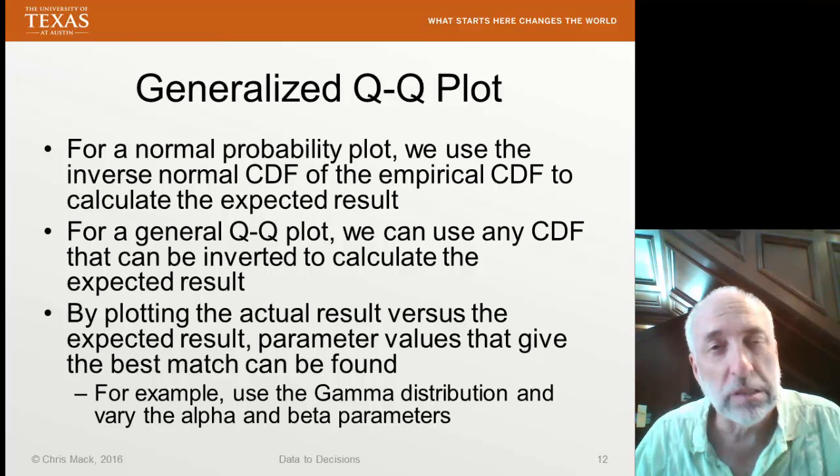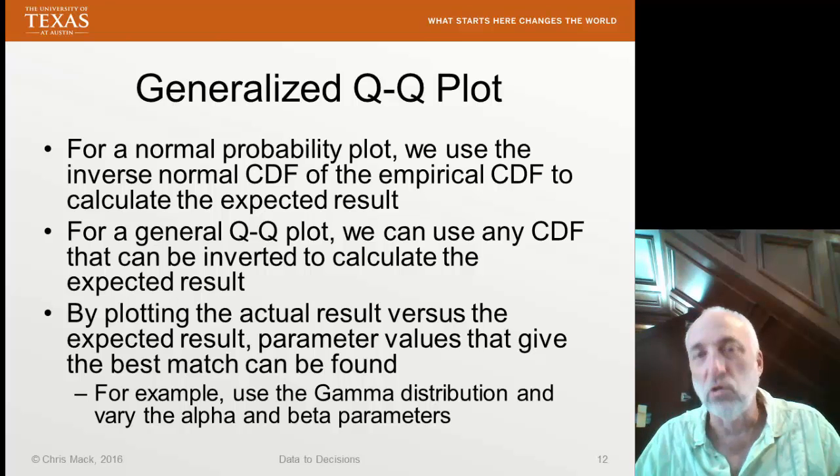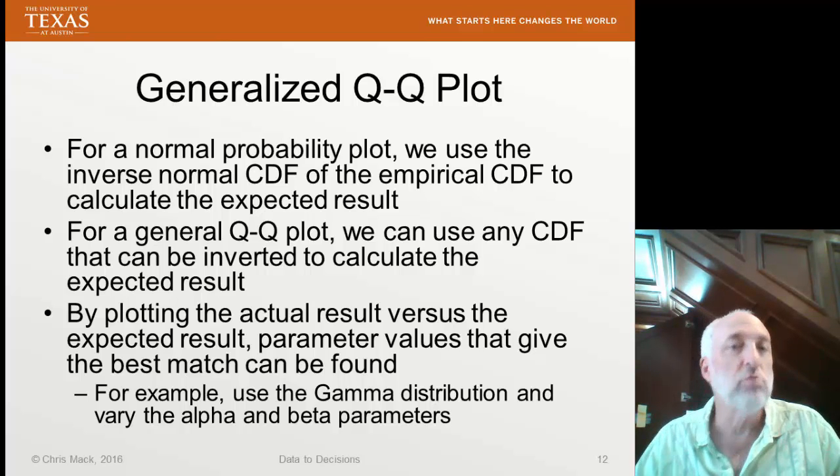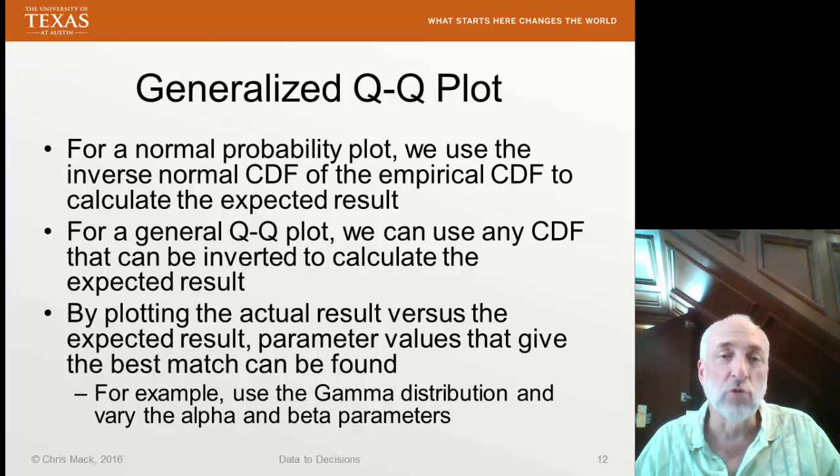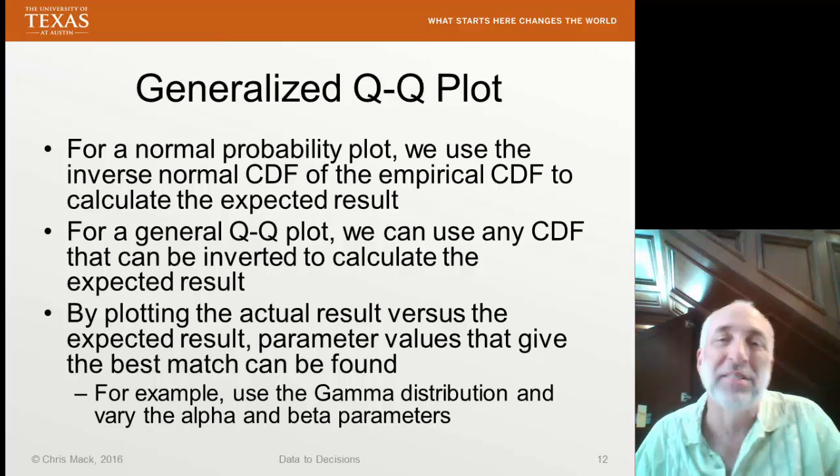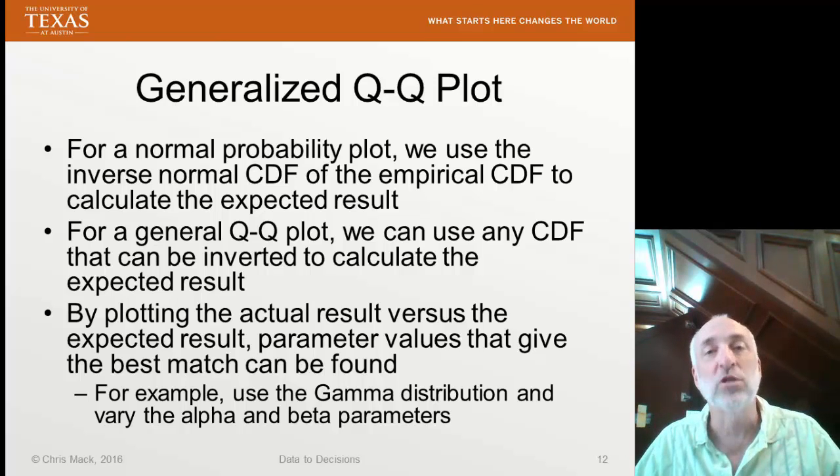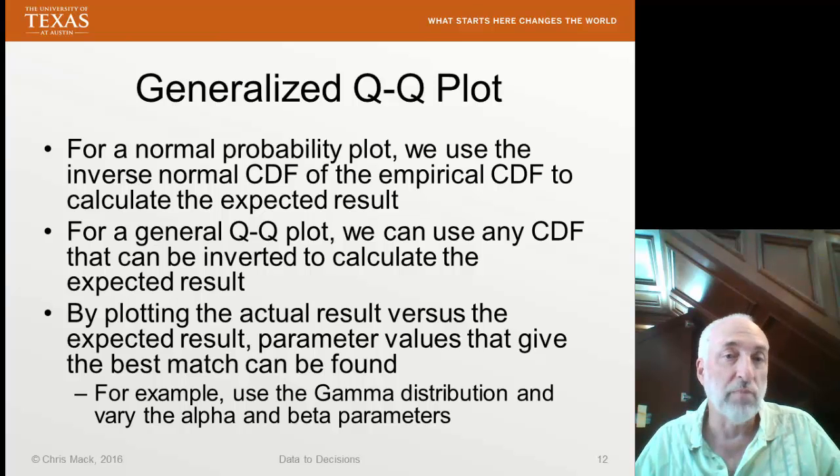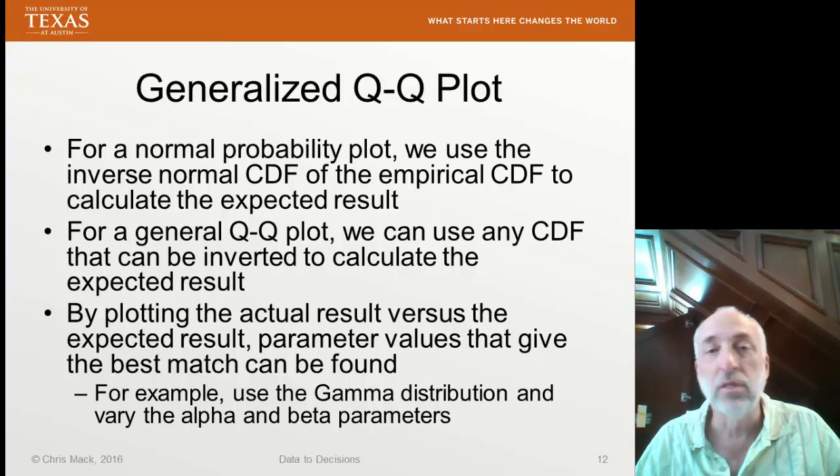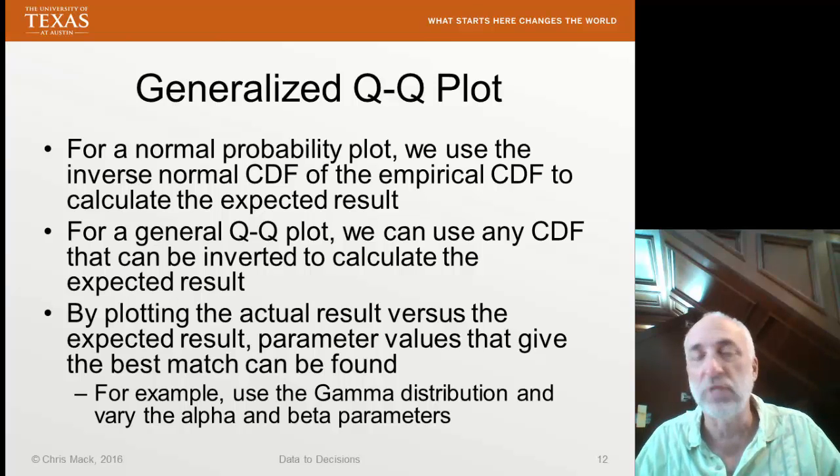You can also use this kind of plot in a more generalized way. So instead of assuming a normal distribution, if we assume some other kind of distribution, then we call this a generalized QQ plot. Normal distribution, normal probability plot, is a special case of the more general QQ plot. We use the inverse normal CDF for a normal probability plot. But we can use any CDF that's invertible to calculate our expected result. And therefore, we can test probability distributions other than normal, given our data.